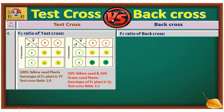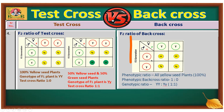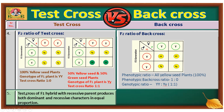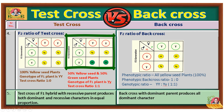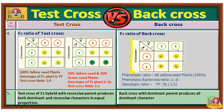Coming to back cross: the F2 ratio of back cross is visible in this Punnett square. The F1 plant is crossed with the dominant parent and the phenotypic ratio in F2 generation shows all yellow colored seeds. So the phenotypic back cross ratio in this case is 1:0 but the genotypic ratio is 1:1. From these diagrammatic illustrations, we can conclude that a test cross of F1 hybrid with recessive parent produces both dominant and recessive characters in equal proportion, whereas back cross with dominant parent produces all dominant characters.